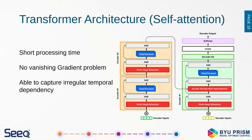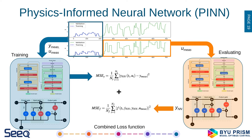Looking at the transformer architecture: it offers shorter processing time, no vanishing gradient problem, and the ability to capture irregular temporal dependencies within models. So it isn't that something must have happened within the last 10 steps — it could be something that happened two minutes ago or ten minutes ago that influences the current prediction.